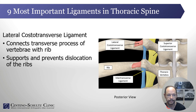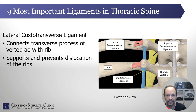Number two is the lateral costal transverse ligament, which is depicted here. It's certainly a mouthful, but basically it connects the rib to the lateral aspect of the transverse process. The transverse process is this little protrusion that occurs at each level in the spine including the thoracic spine. It supports and prevents dislocation of the rib.